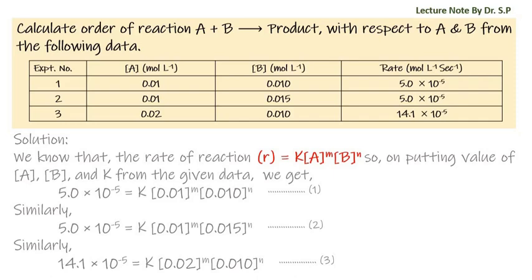Similarly, from experimental data 3 we get: 14.1 × 10⁻⁵ = k × (0.02)^m × (0.010)^n — call this equation 3.